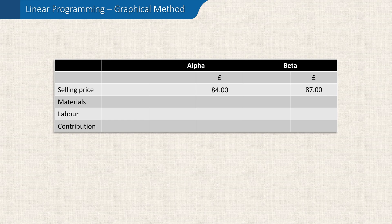The same material is used for both products and costs £3 per kilogram. The alpha requires 6 kilograms, which will cost £18, and the beta 9 kilograms, which will therefore cost £27.